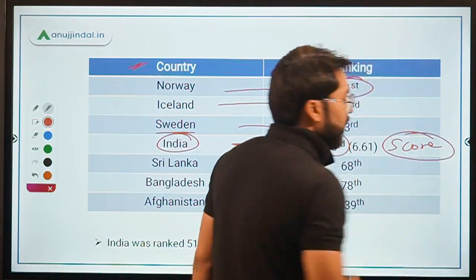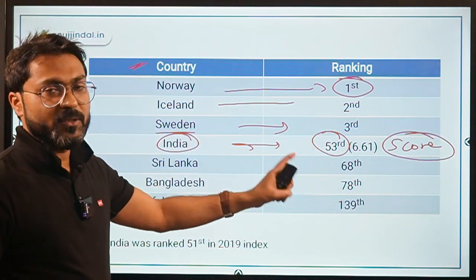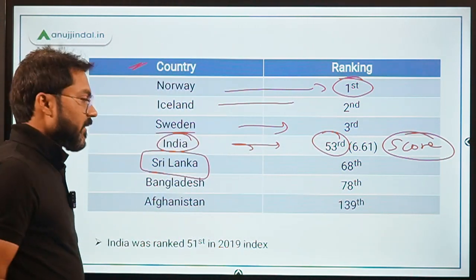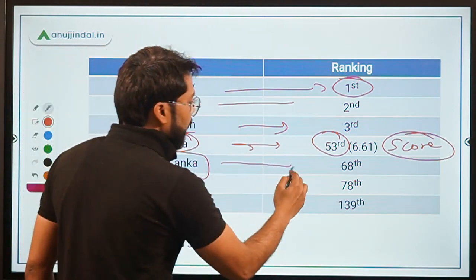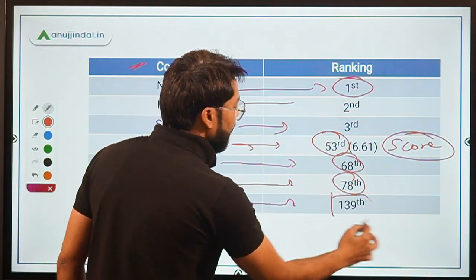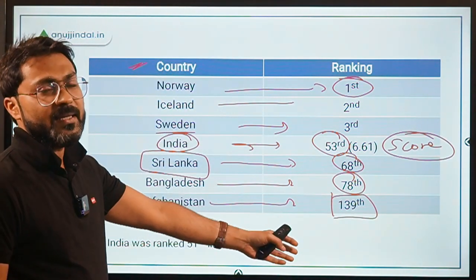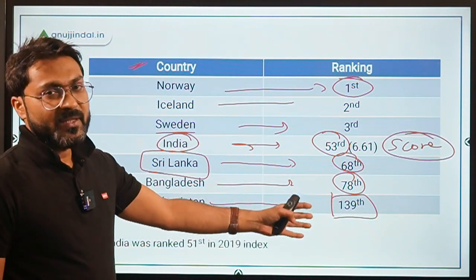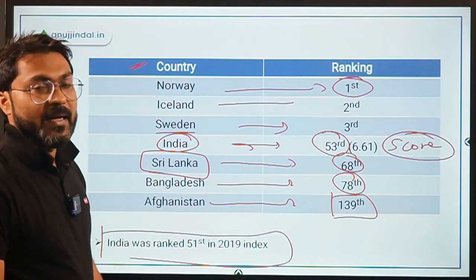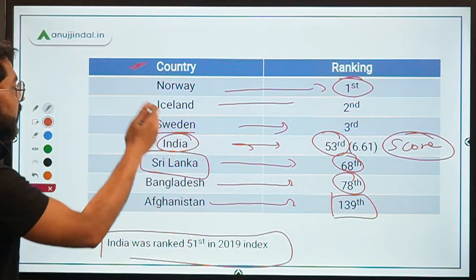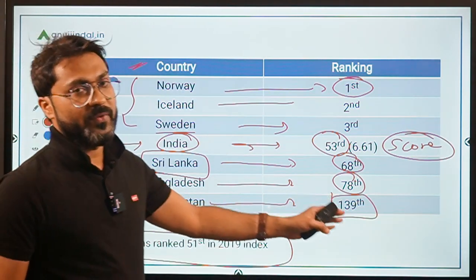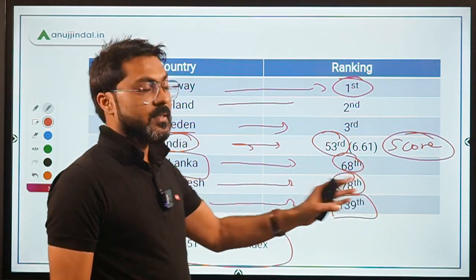India's score in the Democracy Index 2020 is 6.61. For neighboring countries: Sri Lanka is ranked 68th, Bangladesh is 78th, and Afghanistan is 139th. India was ranked 51st in 2019, and you should remember the top three countries, India's rank of 53rd, and India's score of 6.61.